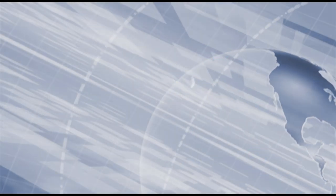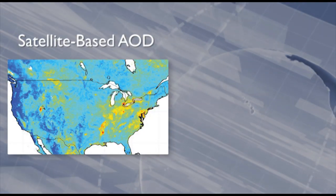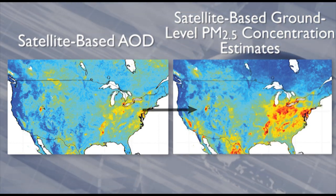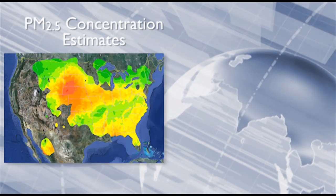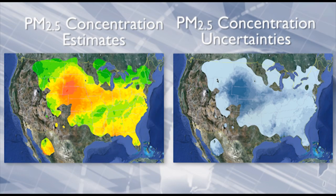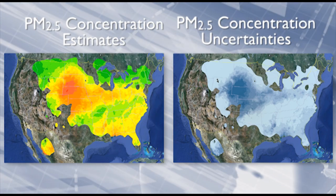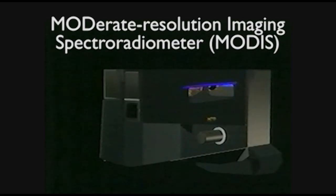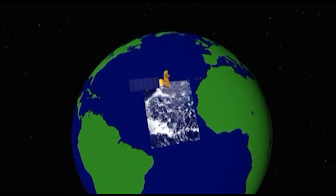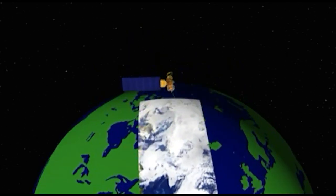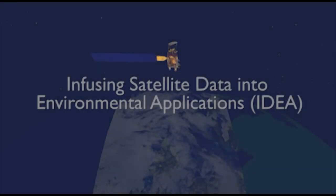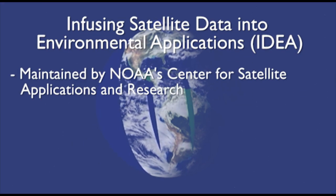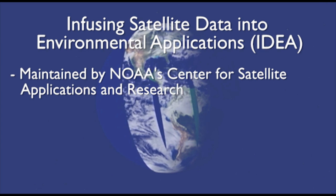These ETA values are then applied to satellite observations of AOD to generate satellite-based estimates of ground-level PM2.5 concentrations. The daily surface PM2.5 concentration estimates and their uncertainties are calculated using near-real-time Moderate-Resolution Imaging Spectroradiometer, or MODIS, AOD data products from the Terra and Aqua satellites. This calculation is performed as part of IDEA, or Infusing satellite Data into Environmental Applications, which is maintained by NOAA's Center for Satellite Applications and Research, part of the National Environmental Satellite Data and Information Service.